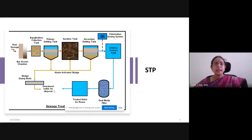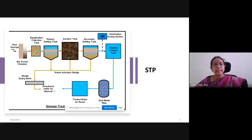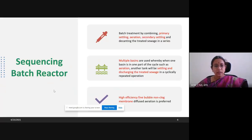This is a typical sewage treatment plant flowchart commonly used in most industries and even in households — including apartments and community places. Now I would like to introduce some new technologies. I'll give a brief introduction about three technologies that are being widely used now.